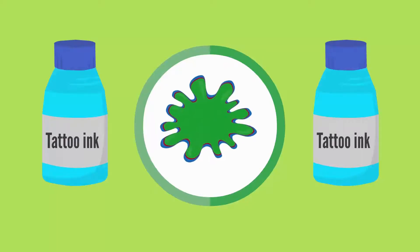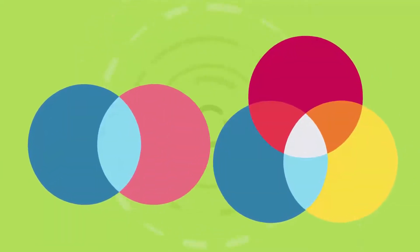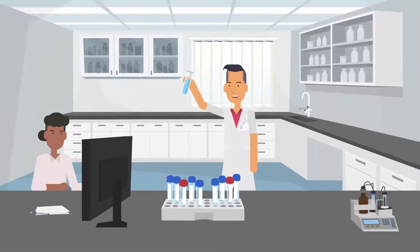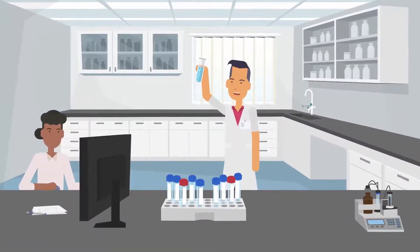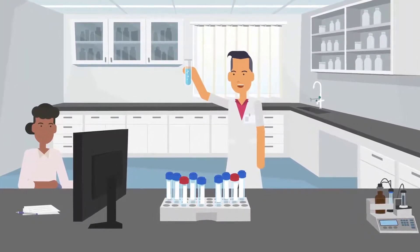Tattoo ink consists primarily of individual pigments and solvents mixed with dispersing agents. The overall color of an ink largely depends on the type and relative quantity of each pigment present. Pigments are only sparingly soluble in solvents, and so dispersing agents are added to help produce a more uniform mixture which can easily be injected under the skin.